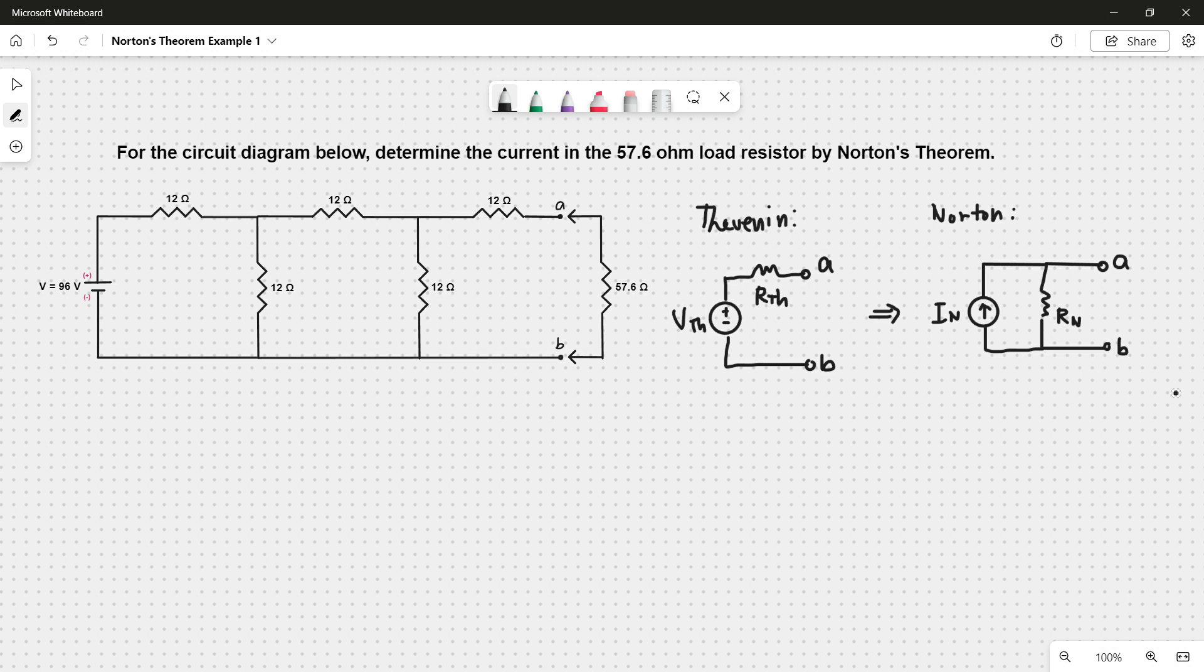Norton's resistance will be the same value as the Thevenin resistance, and the Norton's current will be voltage at Thevenin divided by Thevenin resistance. So again, when working on Norton, we must find the Thevenin equivalent circuit first, then proceed to transform it into Norton.